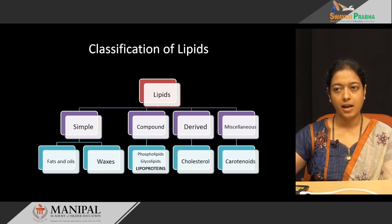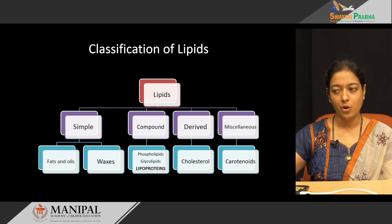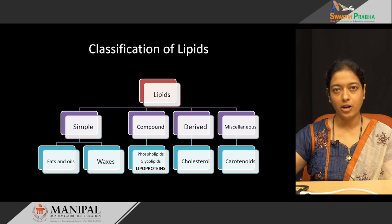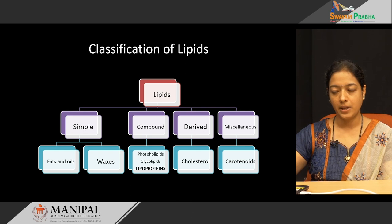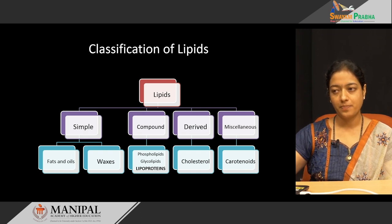Simple lipids are esters of fatty acid with alcohol — examples are fats, oils, and waxes. Compound lipids have an additional group attached: if it is phosphoric acid, it is called phospholipid; if it is carbohydrate, it is called glycolipid. Lipoproteins are lipids attached to proteins. Derived lipids are derived from hydrolysis of simple or compound lipids — for example, cholesterol. Miscellaneous lipids include carotenoids. Today we will concentrate only on lipoproteins.